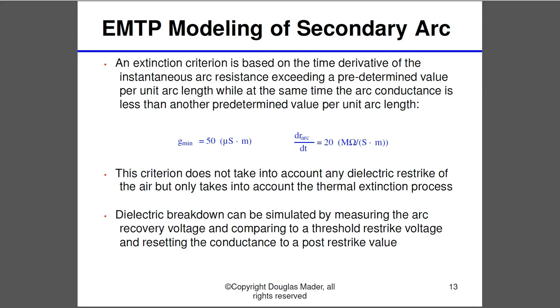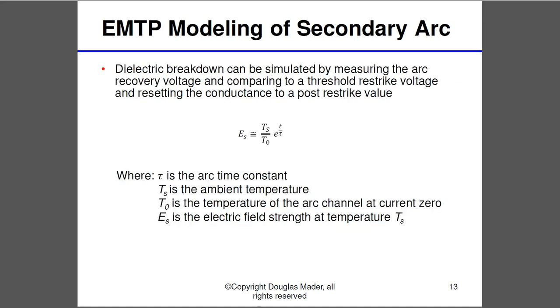So the arc time constant here is inversely proportional to the arc length. And it's given by this equation. And that length of that arc, L subscript arc, is the time-dependent dynamic length of the arc. That's the most important parameter that's going to influence the arc extinction. And the bad news is it's the one that's highly dependent on the random environmental factors, right, wind, thermal buoyancy.